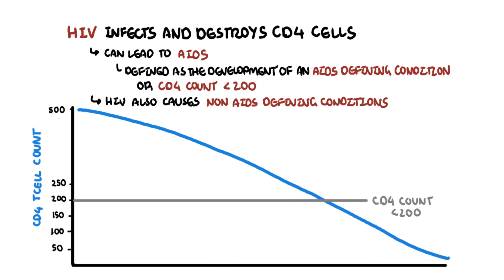Certain AIDS defining conditions or illnesses likely emerge once the CD4 count is below a certain range. Because of the low CD4 count, the organism has the potential to reveal itself, or the malignancy is able to replicate because the immune system is unable to keep control of it anymore. Let's look at this graph and identify the AIDS defining conditions that emerge when the CD4 count hits below 200 cells per microliter.